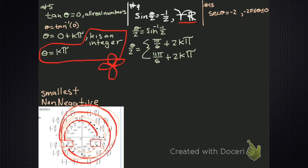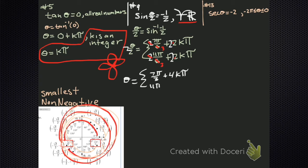Now that's for theta over two. If we're trying to get rid of the division, we use multiplication — multiply everything by two. We reduce, and the solution turns out to be seven pi over three plus four kπ, and eleven pi over three plus four kπ.